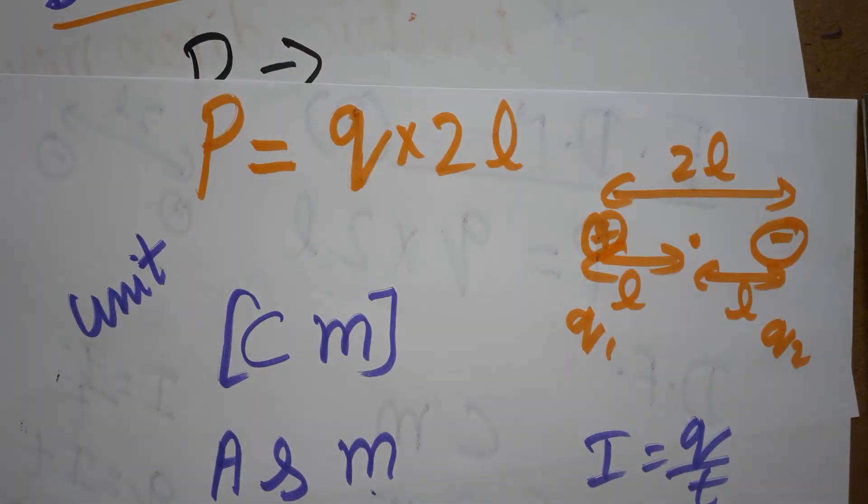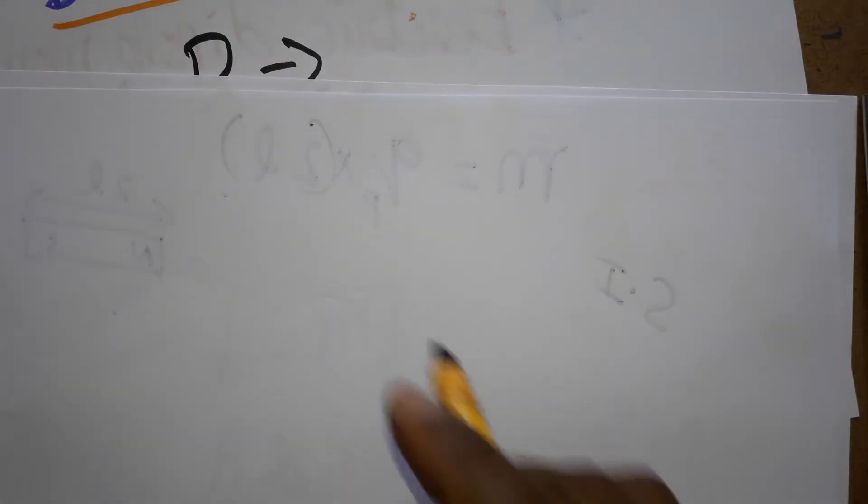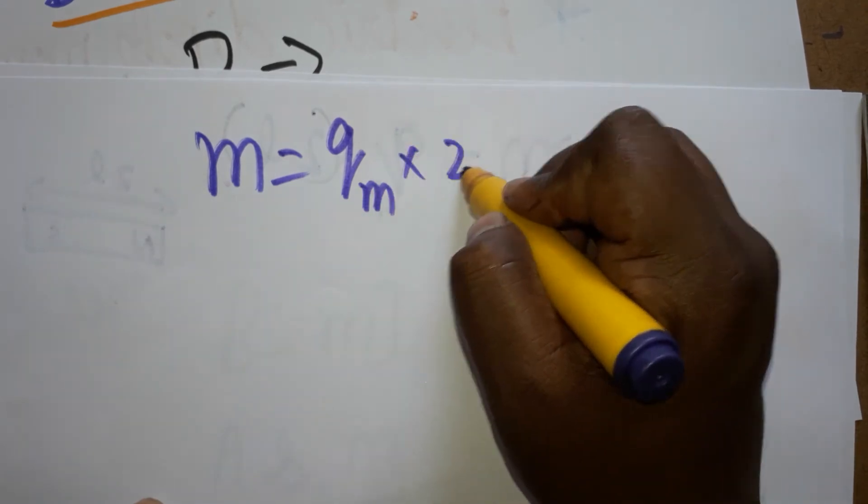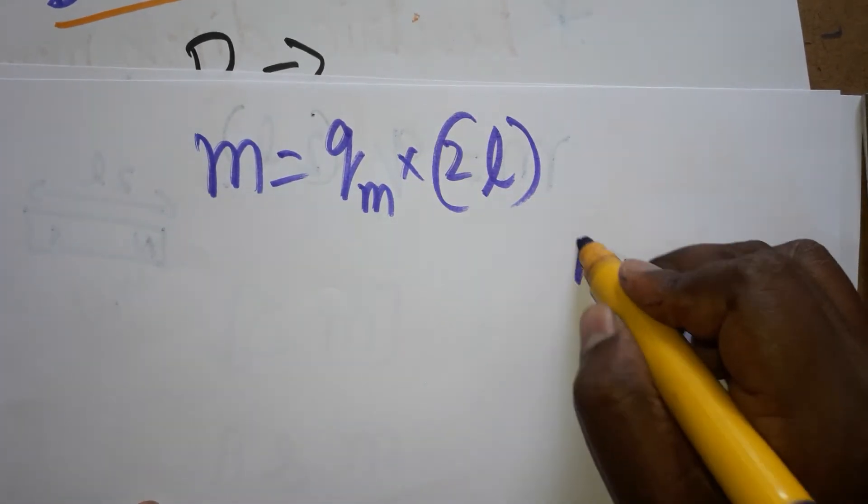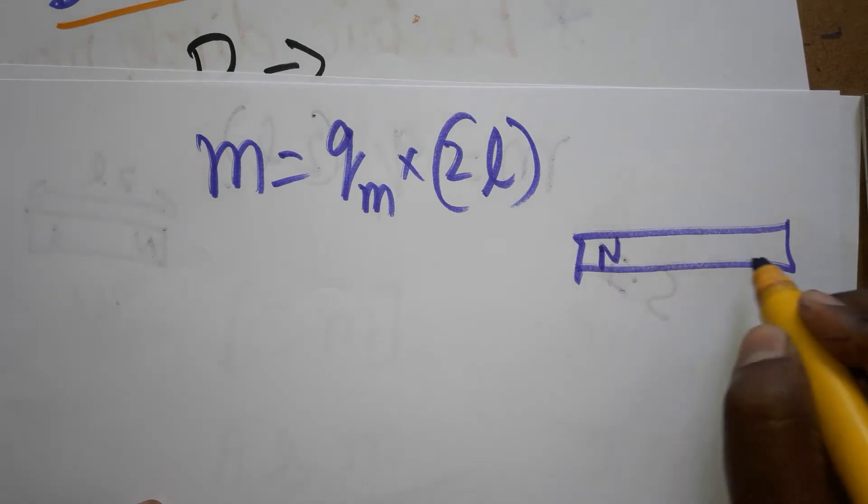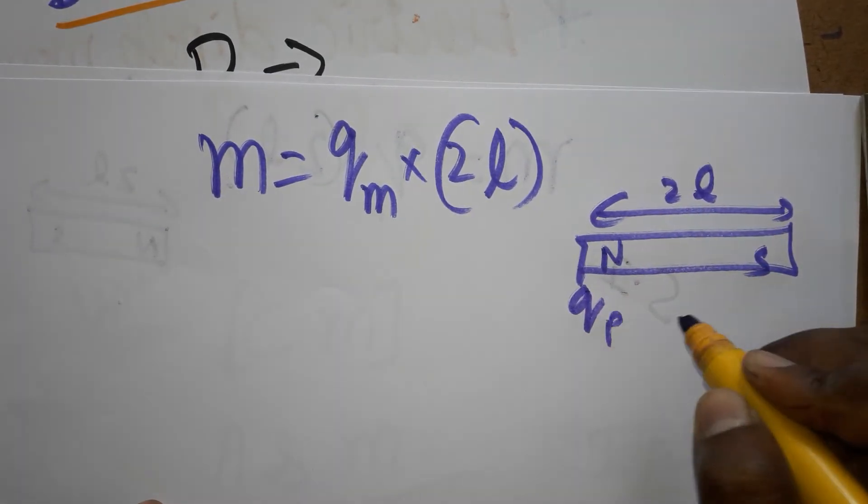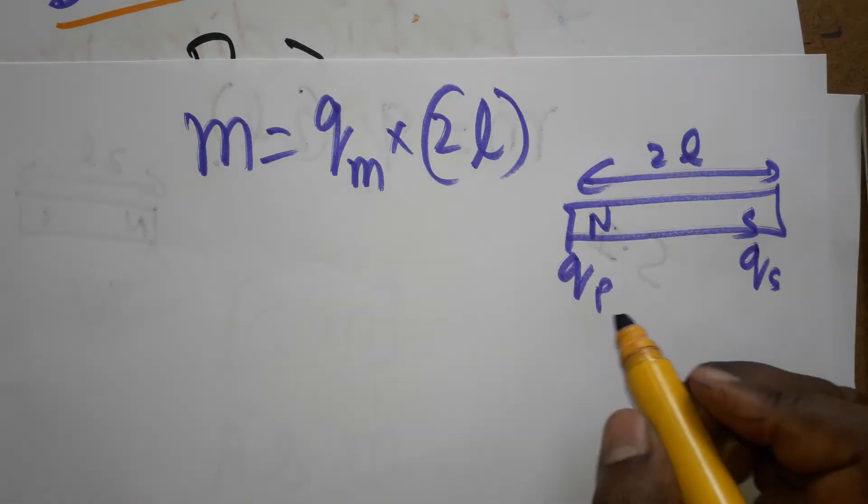Now I am going to teach you what is magnetic dipole moment. For magnetic dipole moment, we have two formulas. One is the pole strength: product of pole strength and distance between the two poles. We have a bar magnet. This north-south distance between the two poles we can take as 2L. Pole strength of north pole, pole strength of south pole.